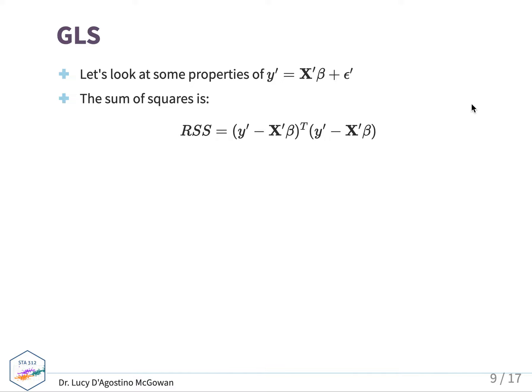it's going to be exactly like what we're used to seeing because this is in the form of ordinary least squares. So it'll just be y prime minus X prime beta transpose times y prime minus X prime beta.